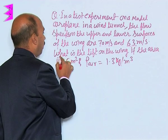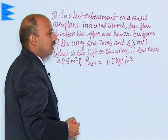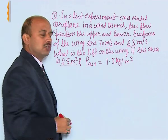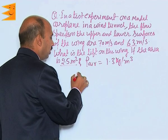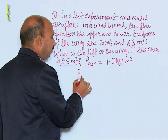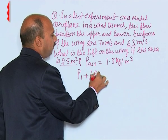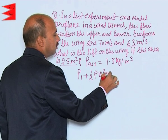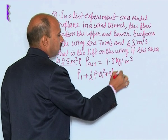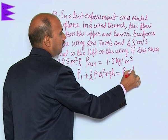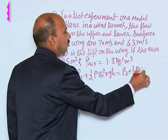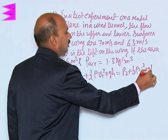And now, here what is the lift on the wing, if the area is this much, we know P1 plus half rho V1 square plus GH is equal to P2 plus half rho V2 square plus GH.